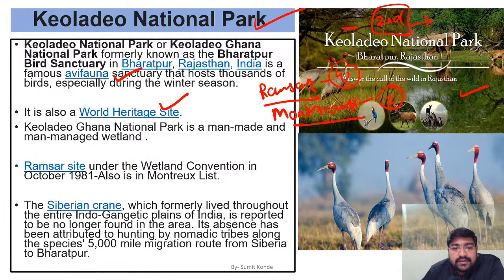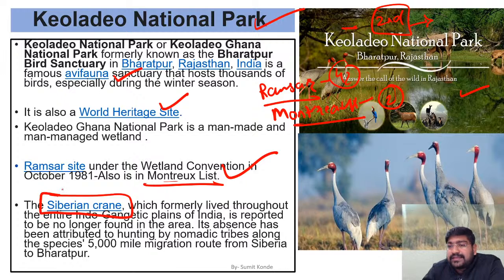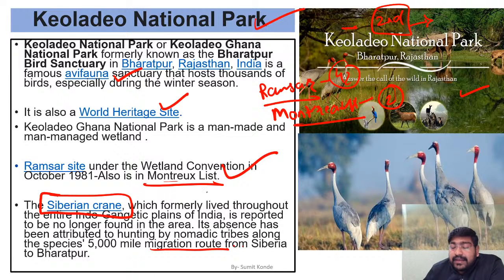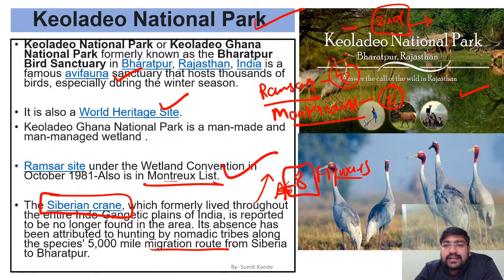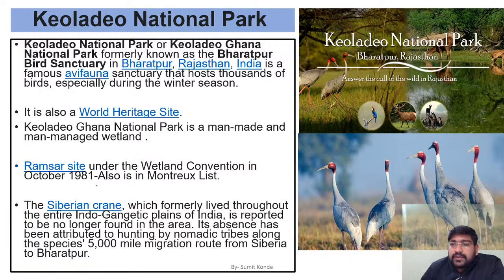Keoladeo Ghana sees migration of Siberian cranes and other species from Siberia during winter, as the harsh Siberian winters drive temporary migration here near Bharatpur. This is seasonal — when summer comes, they return to Siberia. There are eight bird flyways globally — knowing these flyways is an important homework assignment. Keoladeo Ghana is considered one of the most important national parks in Rajasthan.